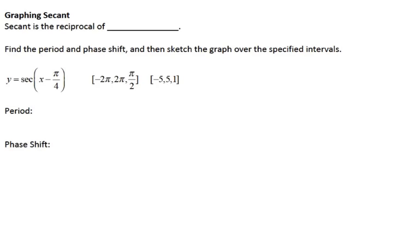The first thing we're looking at is graphing secant. Secant is the reciprocal of cosine. I'm going to find the period and the phase shift, and then sketch a graph over the specified intervals.